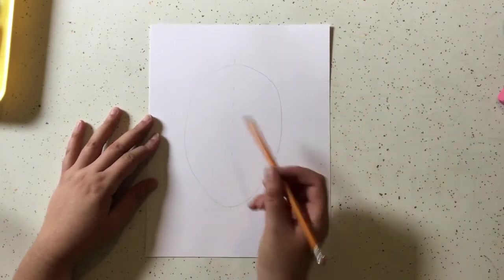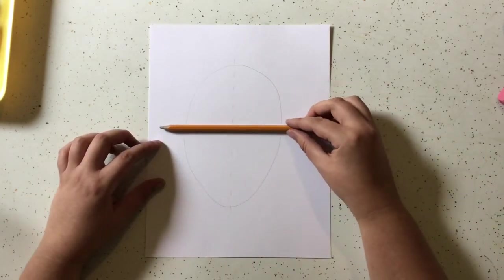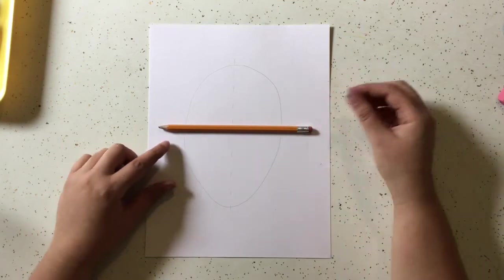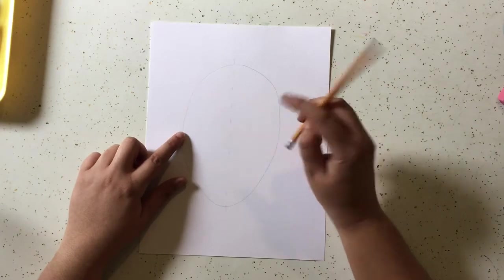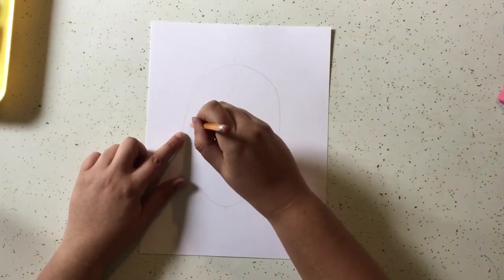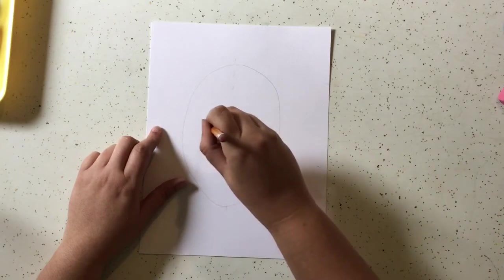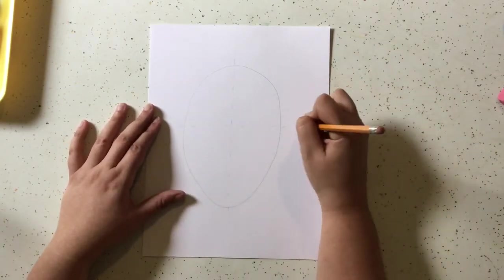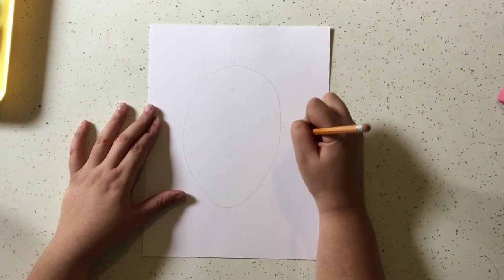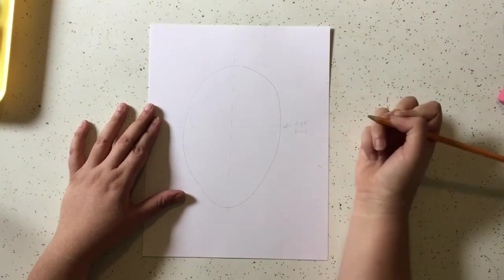Next step, we're going to divide it in half again, except for this time horizontal. And again, right through the middle. So maybe lay your pencil on and find the middle, and then do the same thing. I'm going to do a dashed line. Now this line right here is going to be our eye line. This is where our eyeballs are going to go.